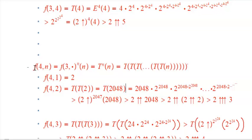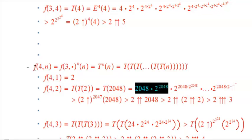So what is T of 2048? Remember, T doesn't mean just exponentiate — it means exponentiate this many times. In other words, it means take 2048 and double it that many times.